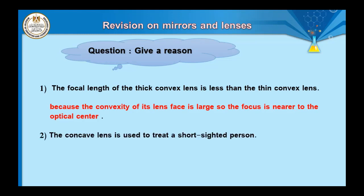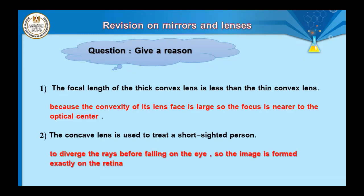Question number two: the concave lens is used to treat short-sightedness. Because it diverges light rays before they fall on the eye, so the image is formed exactly on the retina. In short-sightedness, the image is normally formed in front of the retina, not on it. The concave lens corrects this by diverging rays so the image falls precisely on the retina.